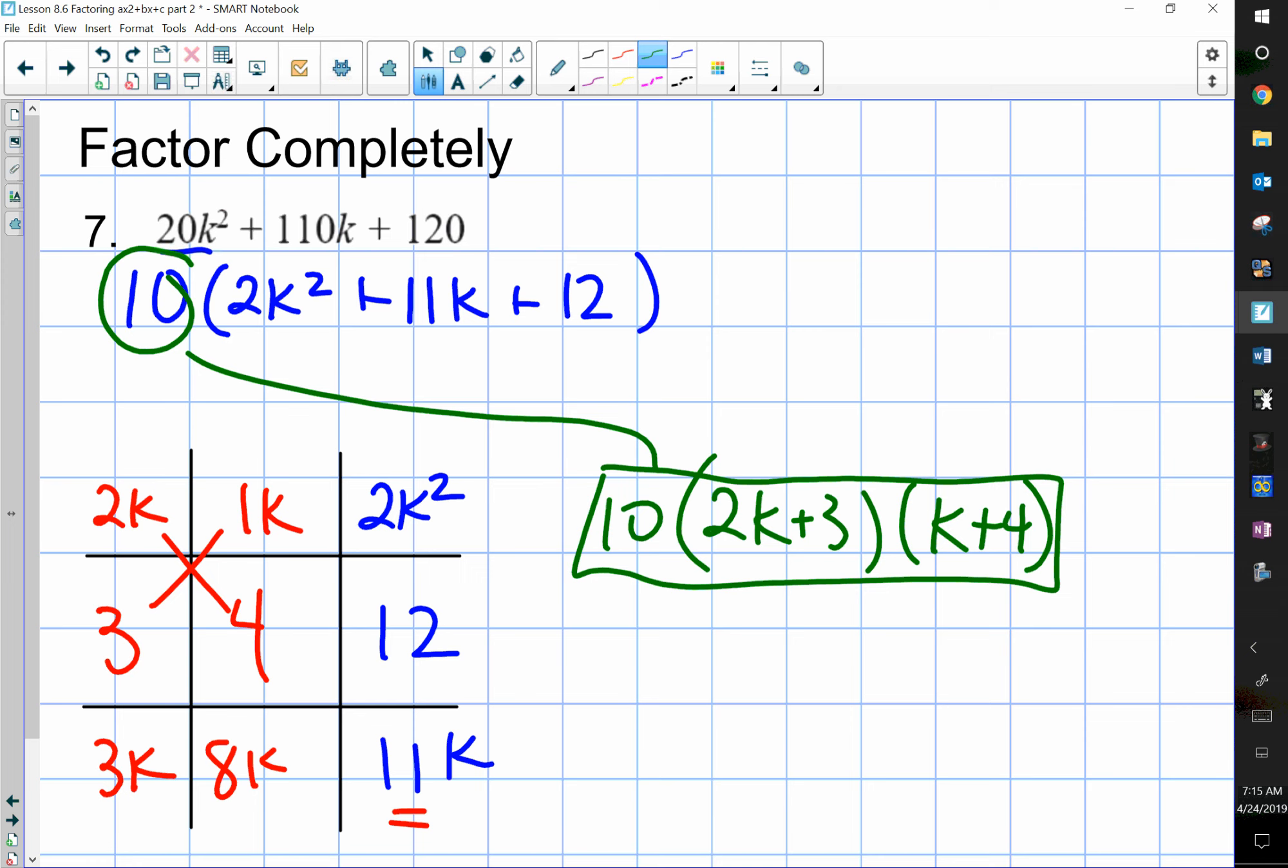So, again, the benefit of factoring completely is that you, one, factor completely, and two, by factoring out the greatest common factor, you make a trinomial that's way easier to factor than the original problem. And that's it.